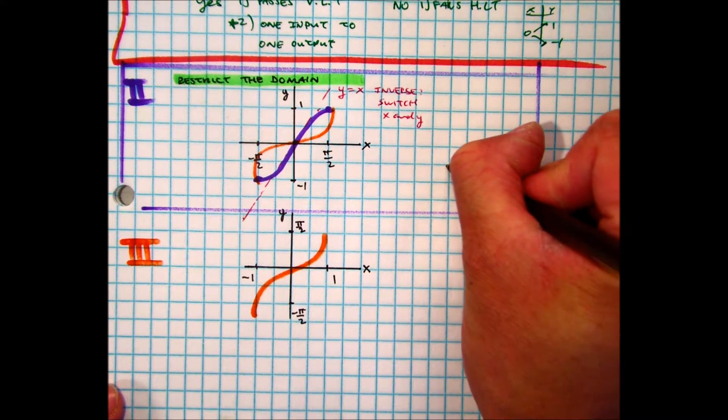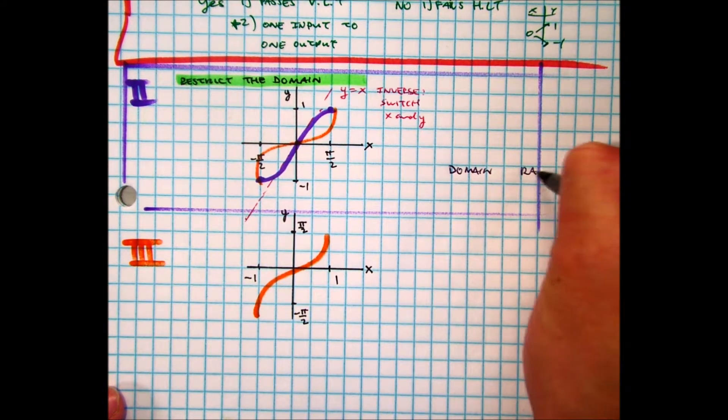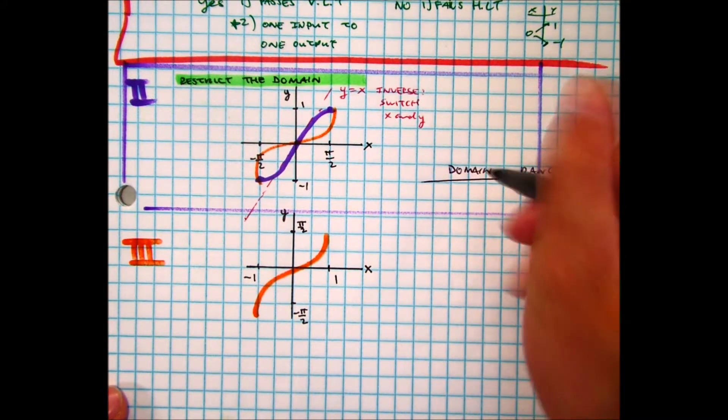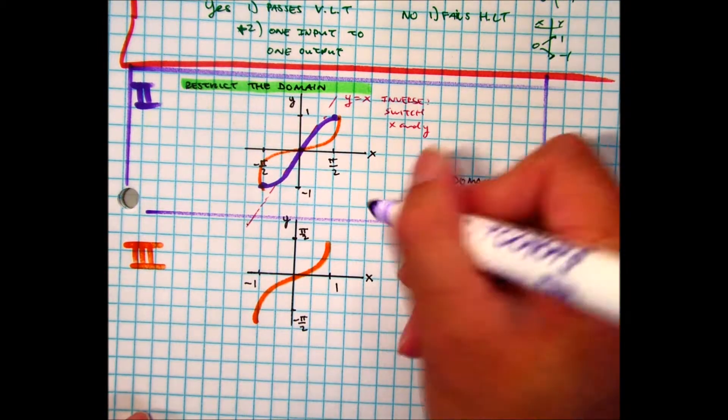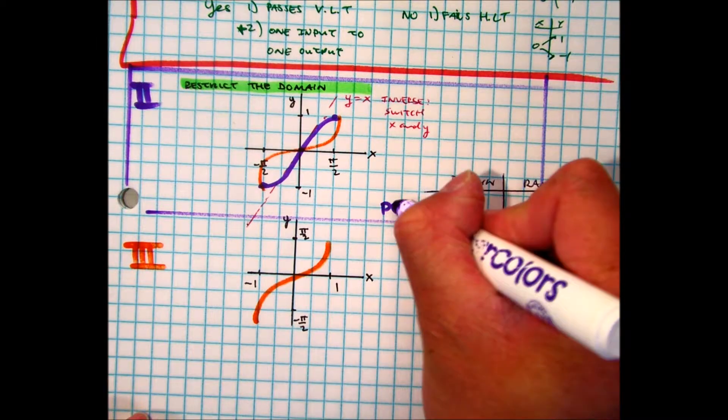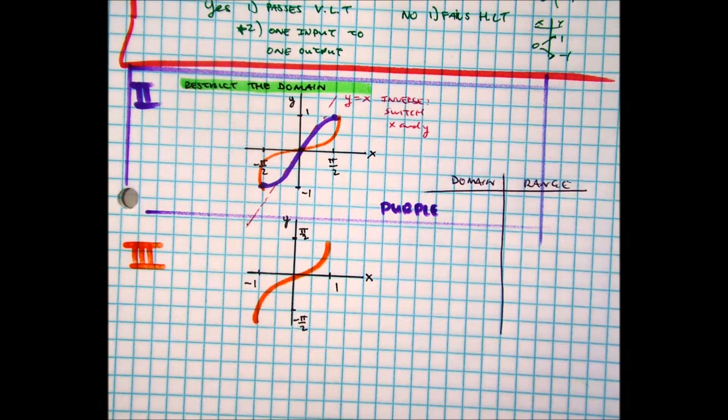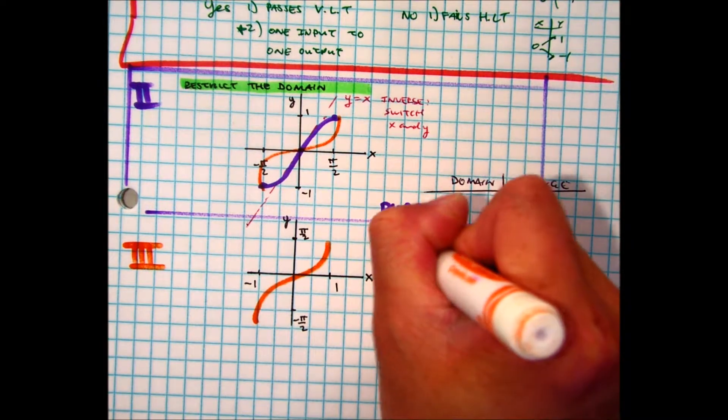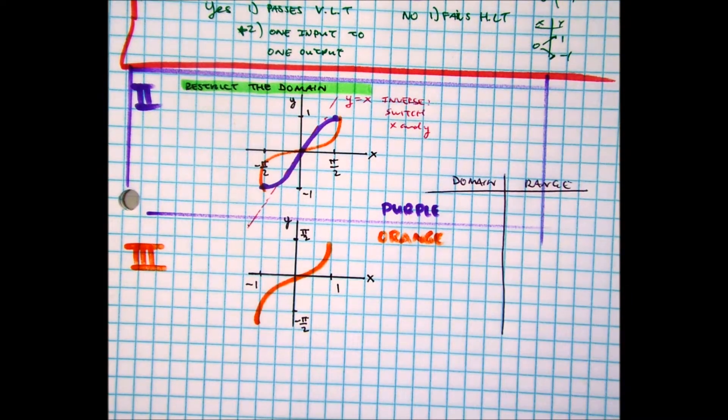Okay, this is what I need you to do. I need you to get the domain and range in interval notation of the purple graph. And then the orange graph. So you should have a total of four interval notations. One, two, three, and four.